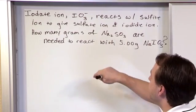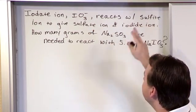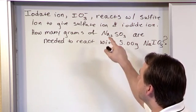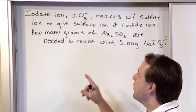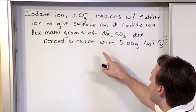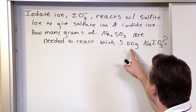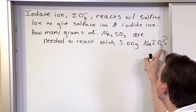So our problem goes something like this. Iodate ion, IO3-, reacts with the sulfite ion to give a sulfate ion and an iodide ion. How many grams of Na2SO3 are needed to react with 5 grams of NaIO3?